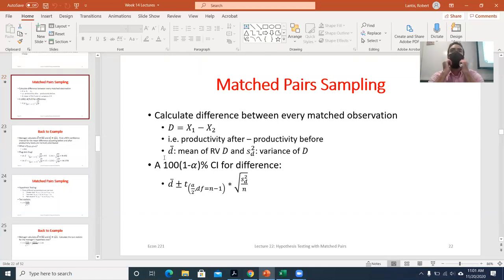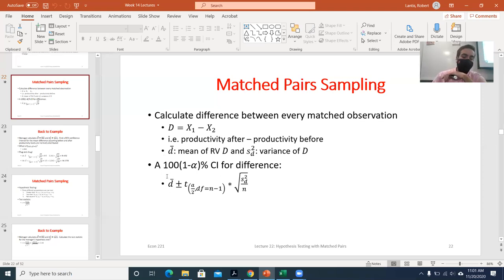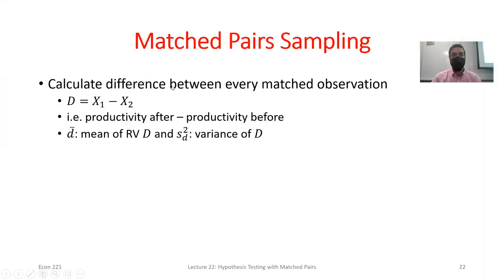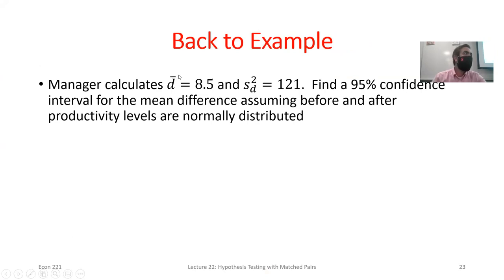We left off last class talking about matched pairs. We had 10 workers with their before and after productivity. We looked at the difference in each worker's productivity and found the average difference — the mean difference. Once we found that mean difference, we can build a confidence interval that looks just like when we were finding a sample mean for one population. It's actually no different once we've created this new difference variable.